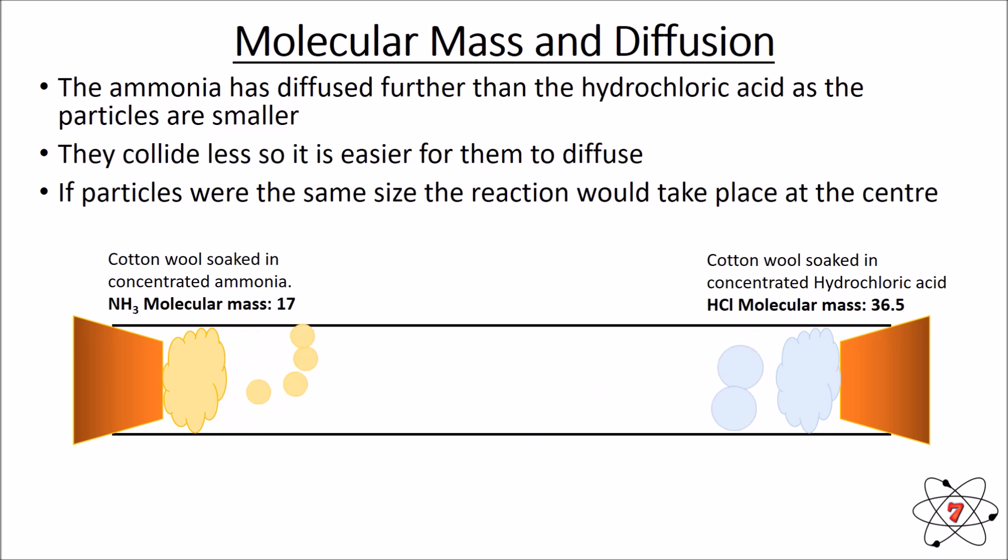Now we can illustrate this with particles again, showing the diffusion of some particles. And we can see the ammonia particles have diffused much further than the hydrochloric acid particles. So the reaction takes place about two-thirds of the way along, much closer to the hydrochloric acid because larger particles diffuse more slowly than smaller particles.